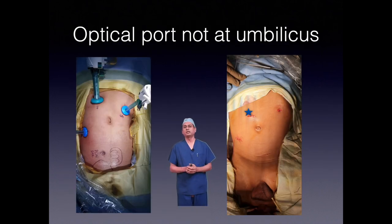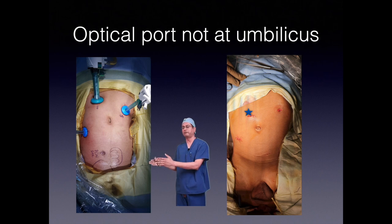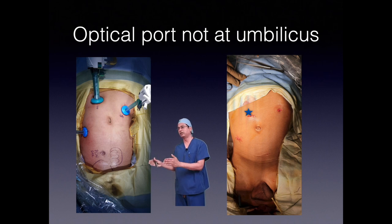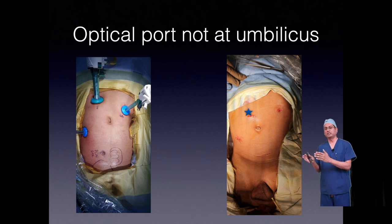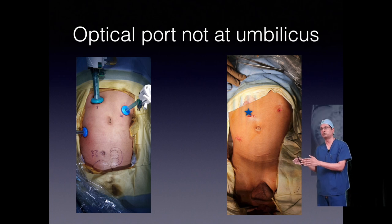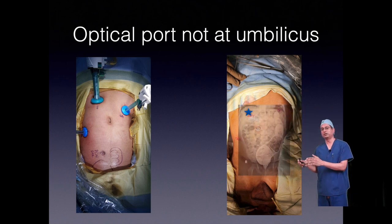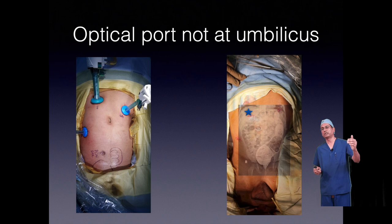There are conditions where it is not possible to place the camera port at the umbilicus. For example, an ectopic kidney placed just above the bladder — if you place the camera port at the umbilicus, the working distance is very short, so you have to place the camera port almost at the subcostal level using the open method. Similarly, in a single-stage laparoscopic Duhamel pull-through, the sigmoid is very close to the umbilicus because it is distended, so we chose to place the camera port almost at the subcostal level.